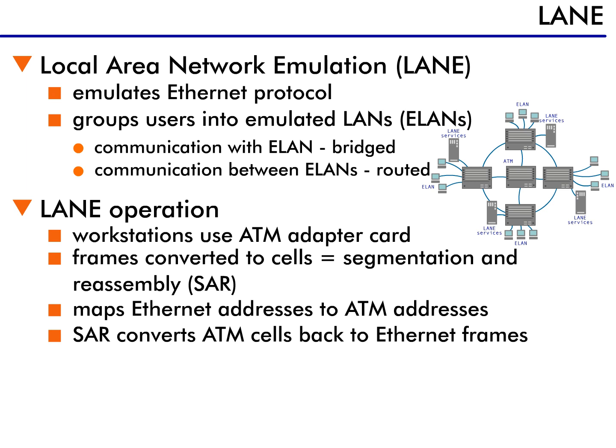Once the frame is converted to ATM cells, a special ATM address is required to cross the ATM network. One of LANE's main features is the ability to build a database that contains mappings of all Ethernet addresses to ATM addresses. Once the ATM address is located, it is used to set up the connection and send the cells on their way.